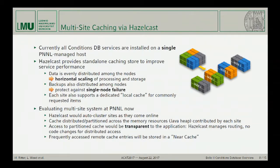What we are now planning to do is federate this out, to have not one single point of failure but multiple instances. We're planning to use Hazelcast, which provides distributed caching to improve response time and performance. The data is evenly stored amongst the nodes automatically, giving horizontal scaling for processing and storage. The more nodes you add, it will just evenly distribute the cache. Backups are also distributed among the nodes, so if one node goes down you don't care — it will just redistribute the backups. Each site will have a local cache, so commonly requested data at a site is served locally without going to other nodes.